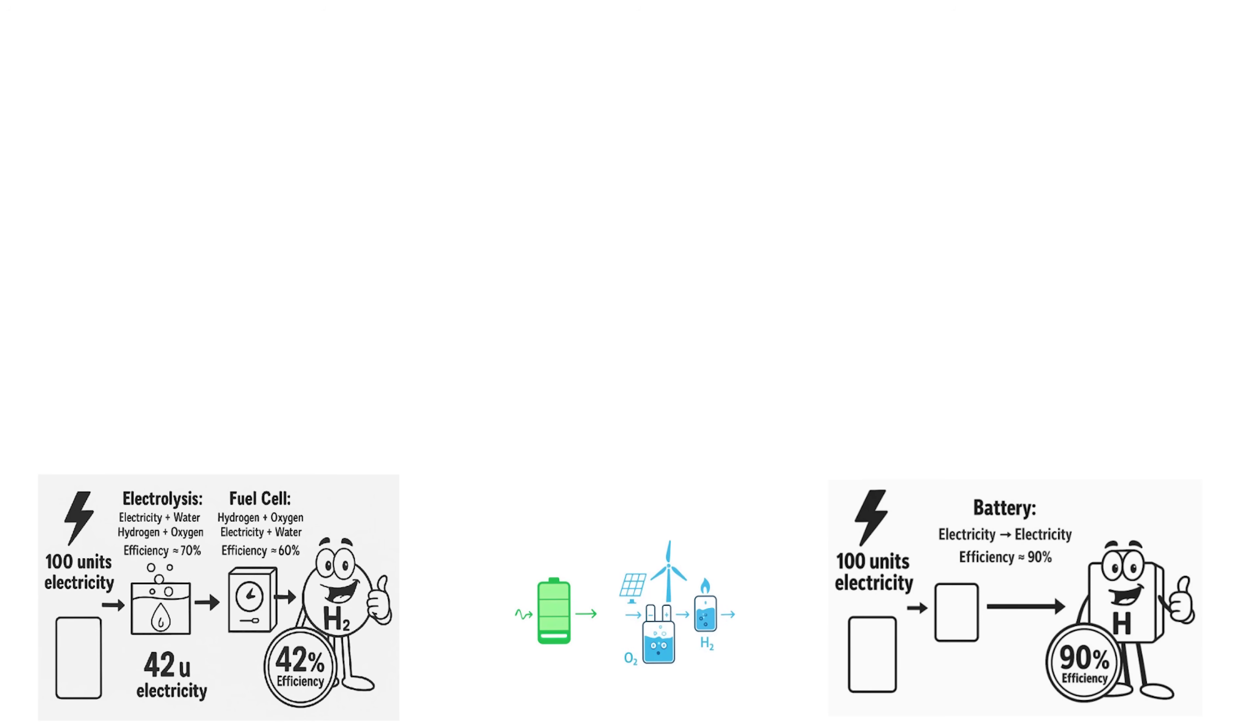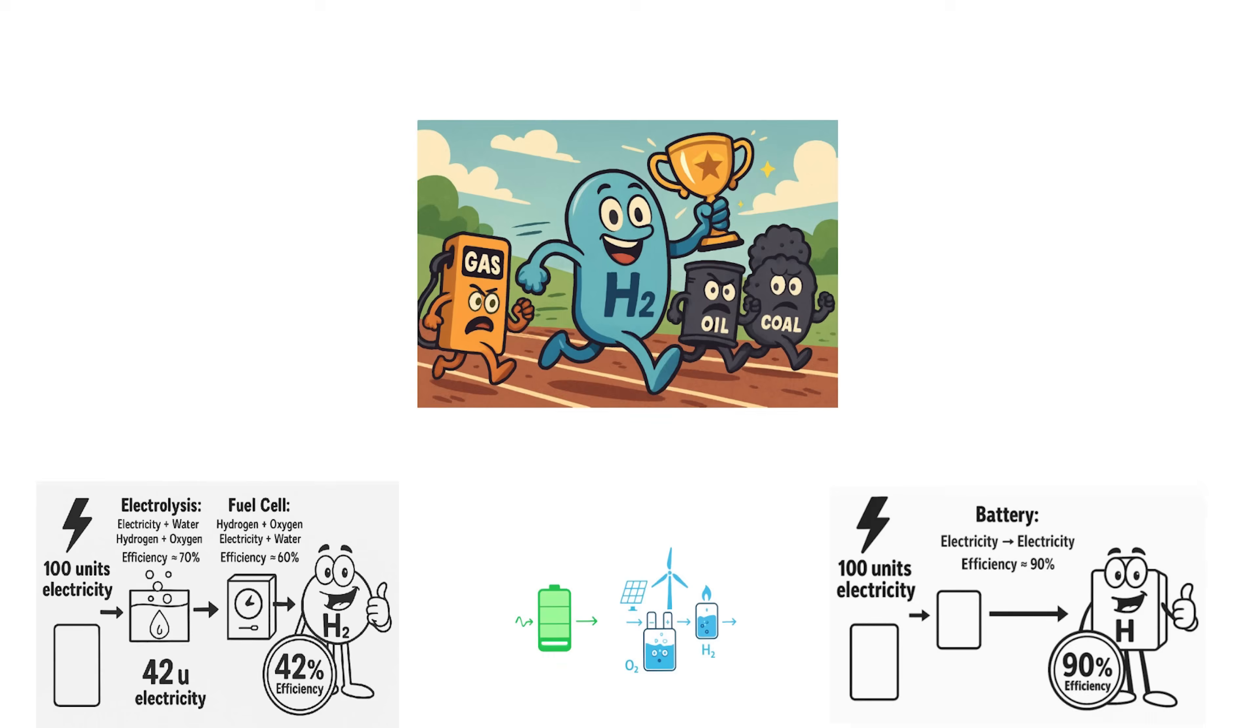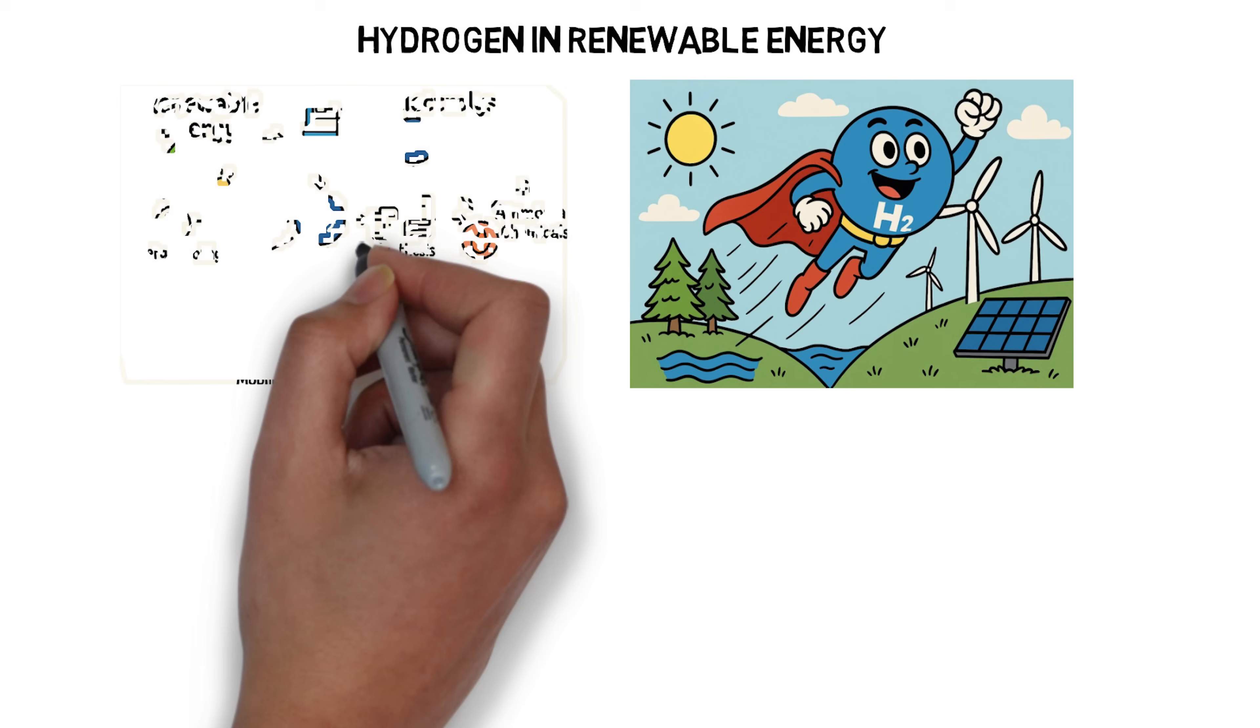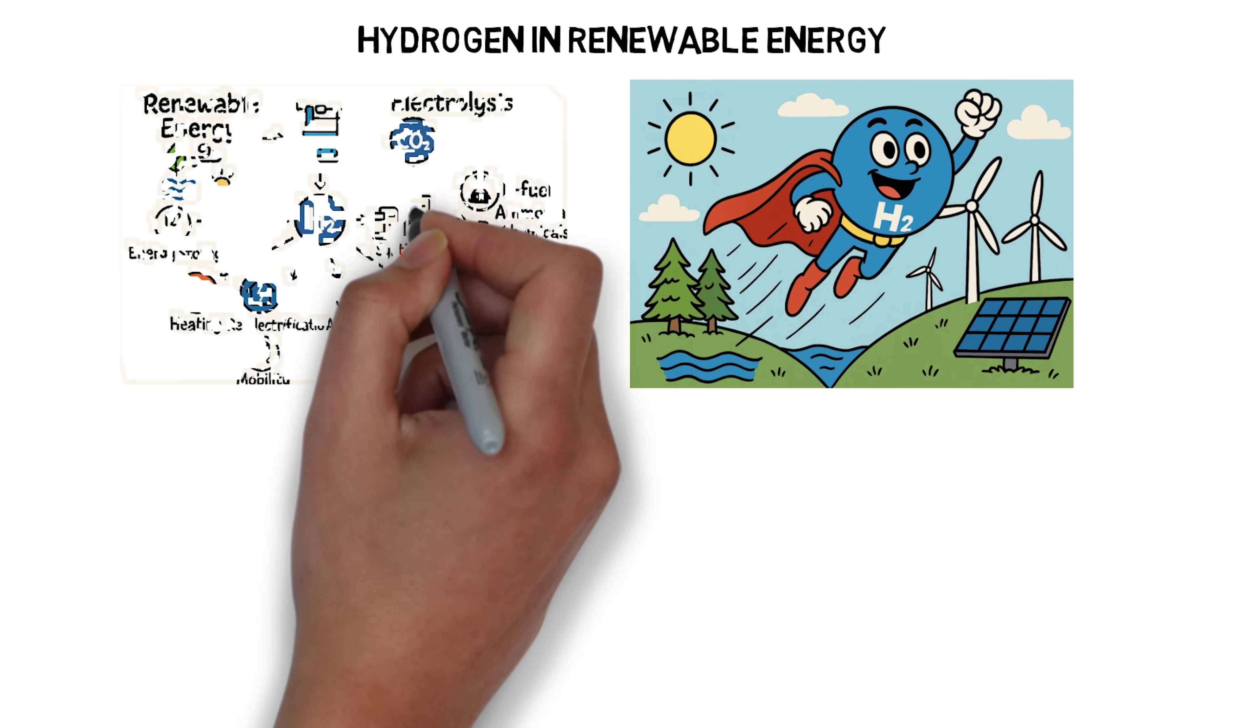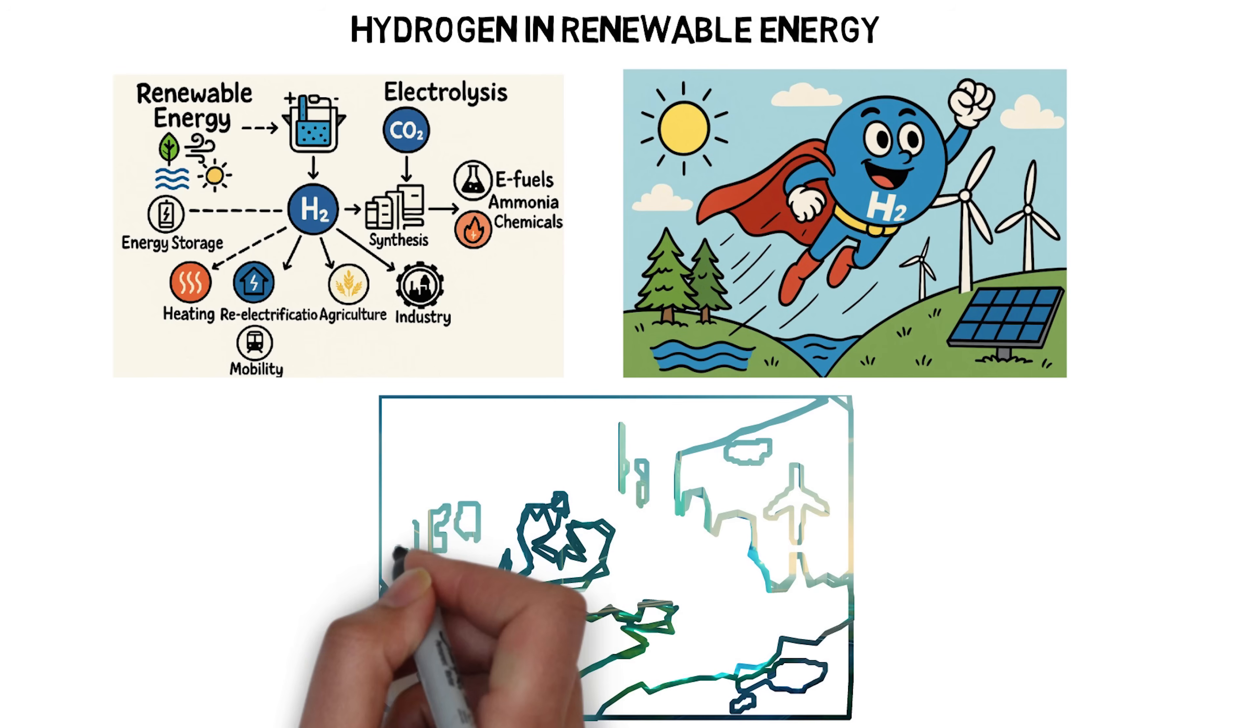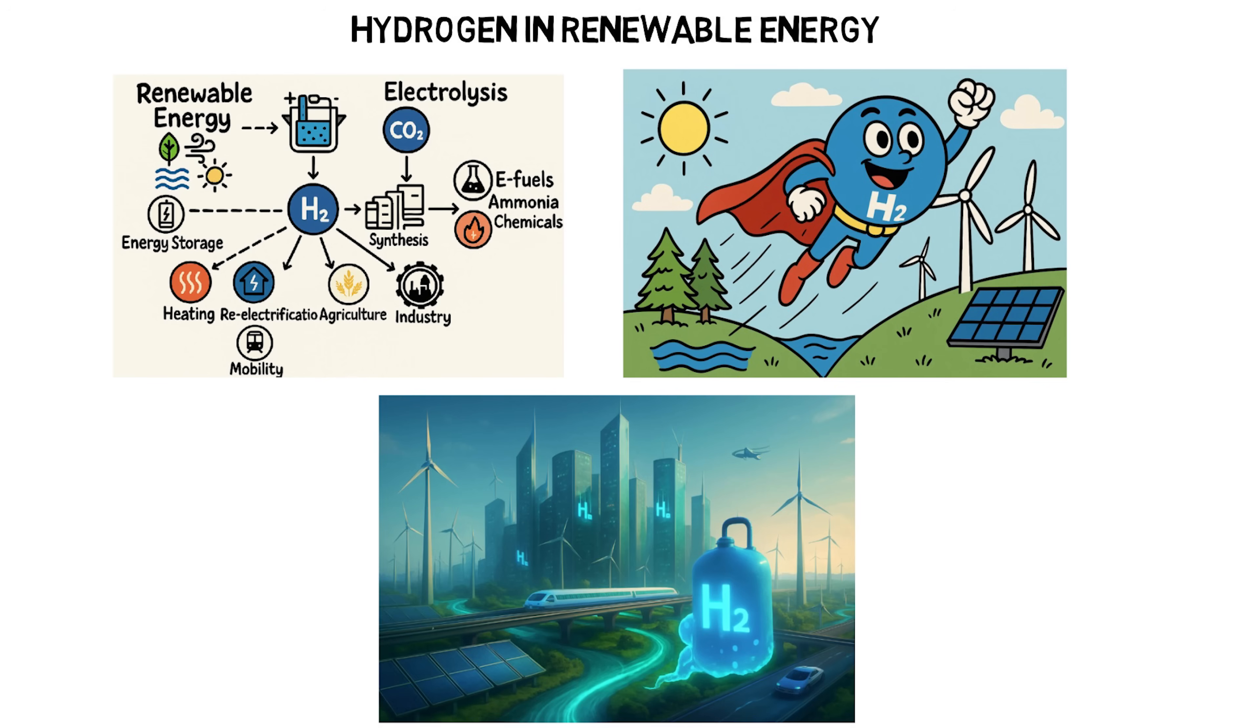But hydrogen has a unique advantage. If it's produced using renewable energy, it can be stored and used at times when that clean power might otherwise go to waste. So hydrogen finds its true power when born from renewable energy. The hydrogen can be stored or combined with captured CO2 to create e-fuels, ammonia, and other essential chemicals. From there, hydrogen flows across industries, stabilizing the grid, delivering clean heating, powering fuel cells for re-electrification, and sparking innovation in agriculture, manufacturing, and mobility. It's more than fuel. It's a super fuel, versatile, clean, and ready to power a carbon-free future.